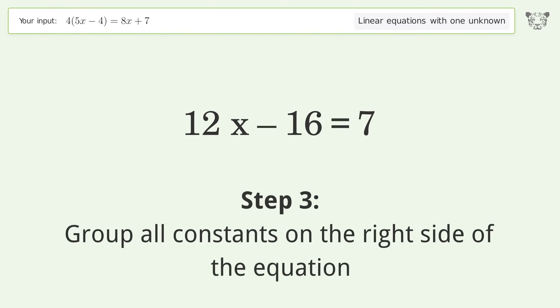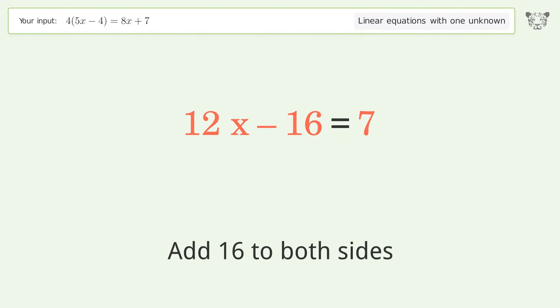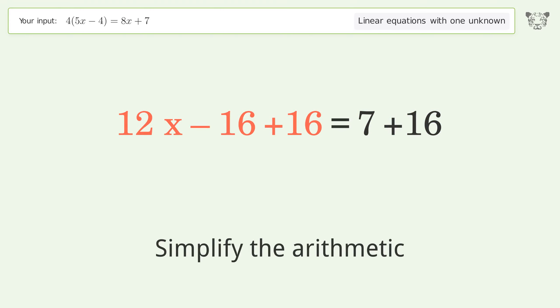Group all constants on the right side of the equation. Add 16 to both sides and simplify the arithmetic.